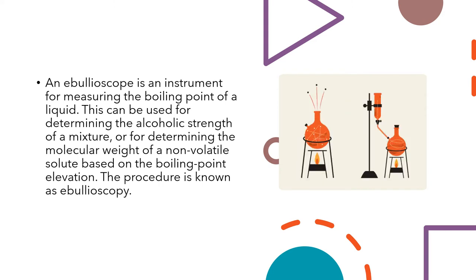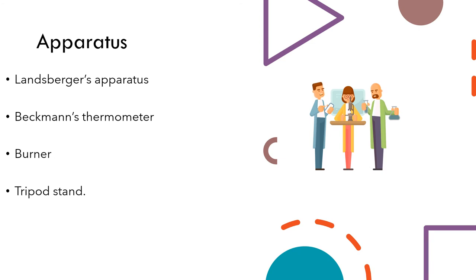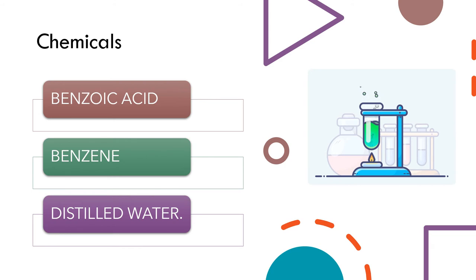In the lab we design a proper assembly. We can use the ebullioscope for determining the alcoholic strength of a mixture. We can also use it to find the molecular weight of a non-volatile solute, which is the concern of this experiment. For apparatus, we use the ebullioscope assembly, a Beckmann's thermometer, a burner, and a tripod stand. The chemicals used are benzoic acid, benzene, and distilled water, though you may work with different chemicals.